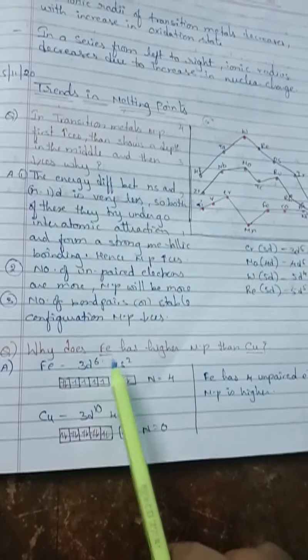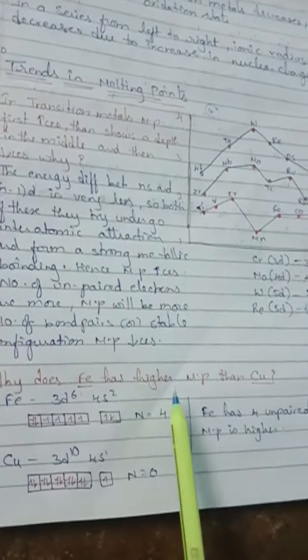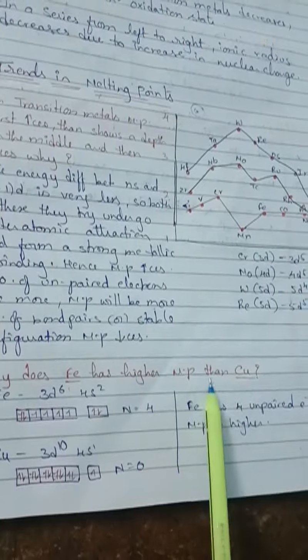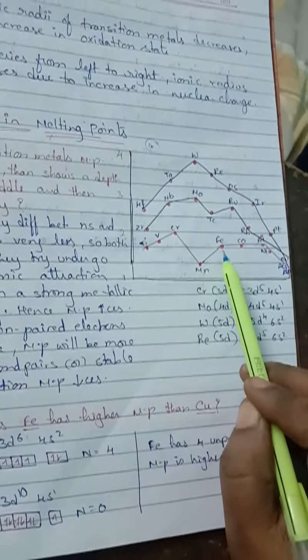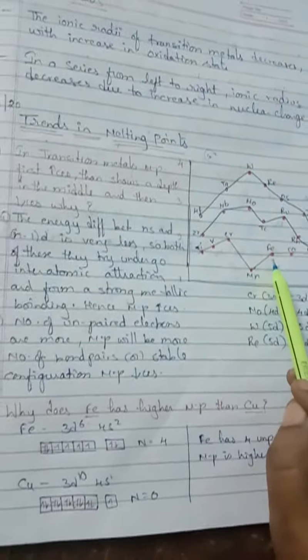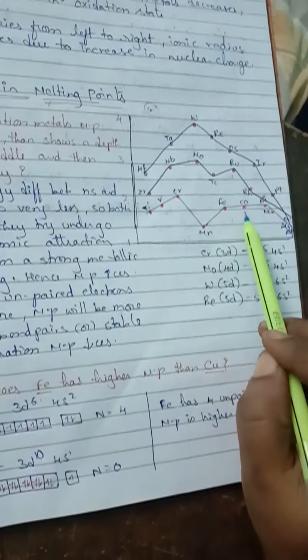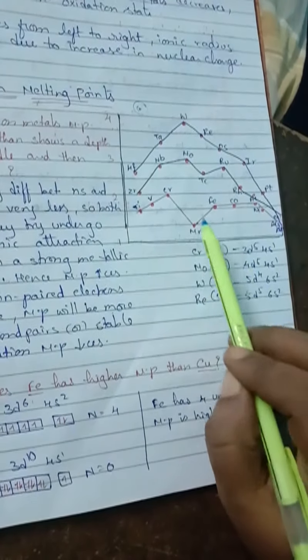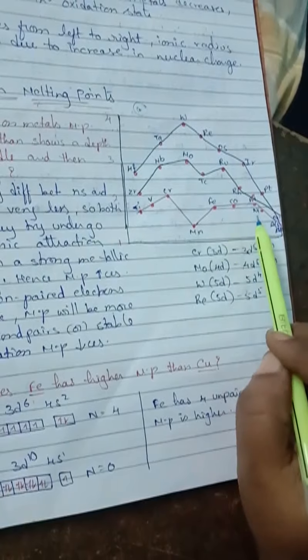Based on this, the second question: why does iron have a higher melting point than copper? Where is iron here? This one is iron and copper is here. Iron, cobalt, nickel, copper, zinc.